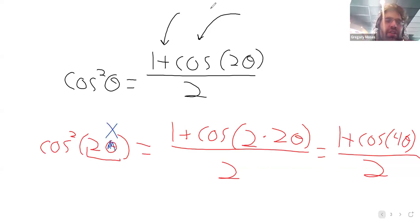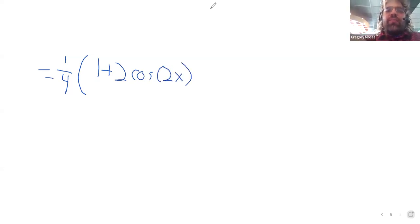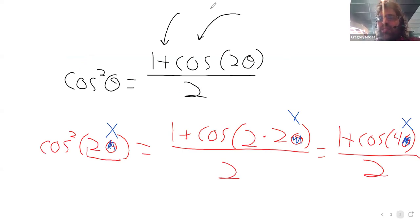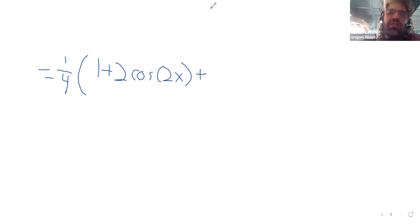I mean, instead of theta, we're calling our variable x. And we wind up with 1 fourth, 1 plus 2 times the cosine of 2x, 1 plus the cosine squared of 2x, which equals this. 1 plus the cosine of 4x.